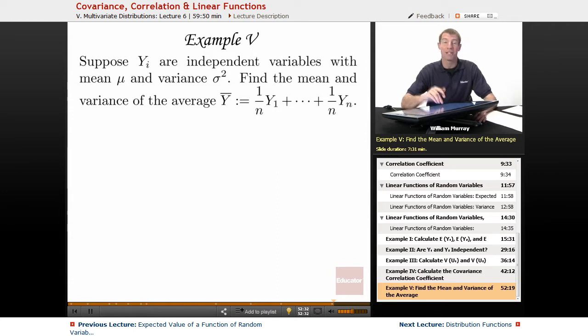So the average just means you add them up and divide by the number of variables you have. So it's 1 over n, y1, up to 1 over n, yn. And I wrote it that way to really suggest that this is a linear combination of the original random variables. So this is a linear function.